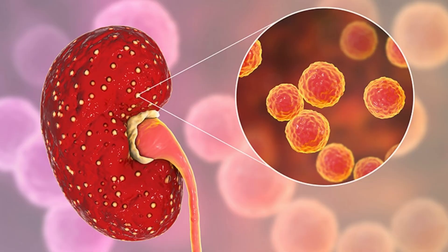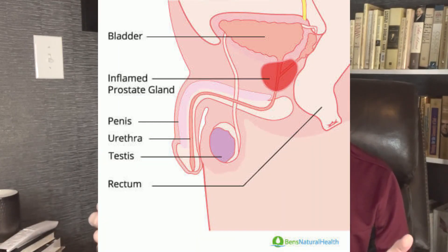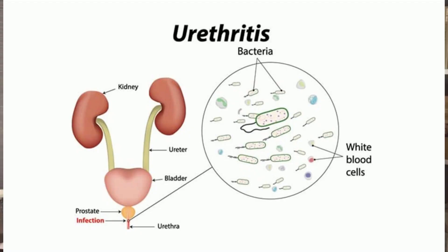Now the bladder is not the only urinary system that can be affected. You can have pyelonephritis which is infection in the kidney itself. You can have epididymitis or prostatitis which are infection of male sex organs. You can have urethritis which is an infection of the urethra, most commonly in men due to a sexually transmitted infection, but not always.